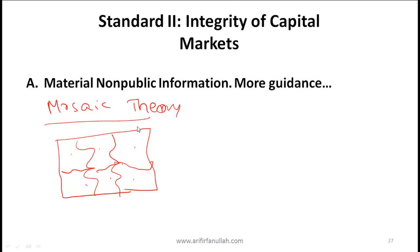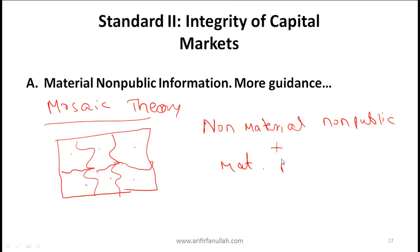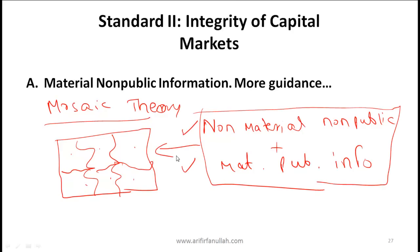According to the mosaic theory, it is acceptable for analysts to combine non-material non-public information with material public information to come up with an investment story or analysis. Your analysis might conclude that a certain stock is a buy, and this is perfectly acceptable. This is the mosaic theory — putting together different pieces of information, as long as each piece is either non-material non-public information or material public information.